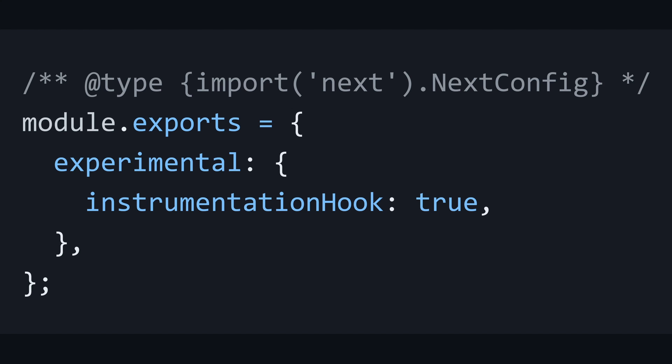Both of those require that we actually enable this instrumentation hook. That's important because you don't want to have extra overhead for your Next.js application of measuring spans and starting things up if you're not actually going to use that. So why slow down an application that isn't going to use that stuff? So instead you need to configure this hook.